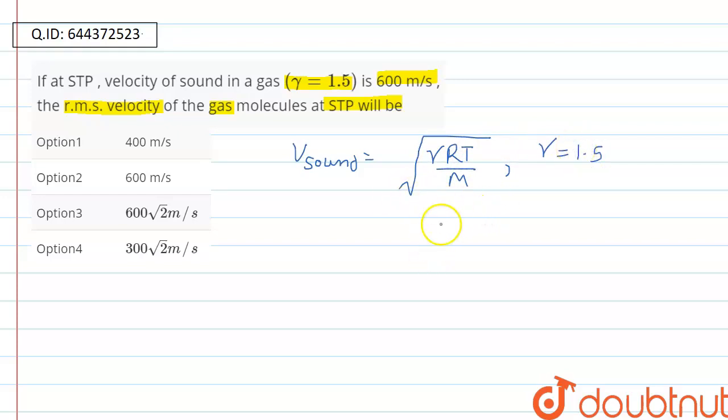Now from here if we try to calculate the value of RT upon m, we will have squaring both sides we will get v²_sound equal to gamma RT upon m, and calculating RT upon m is equal to v²_sound upon gamma.